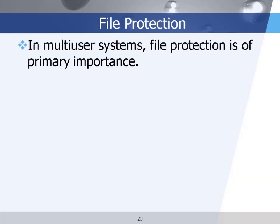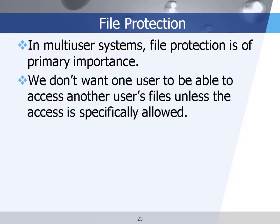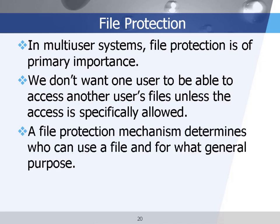In multi-user systems, file protection is quite important because you don't want your files to be accessed by other users freely. You want to set up access rules — for example, allowing only specific users to read your file by setting permissions. The file protection mechanism determines who can use the file and in which way.